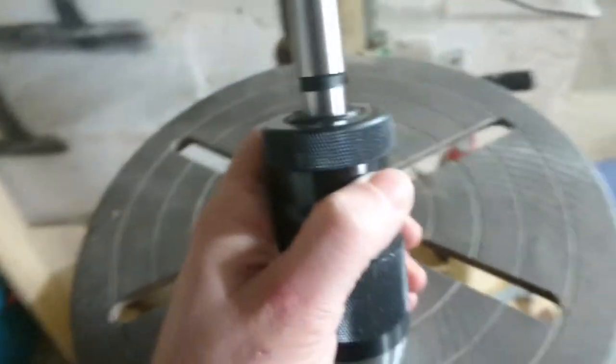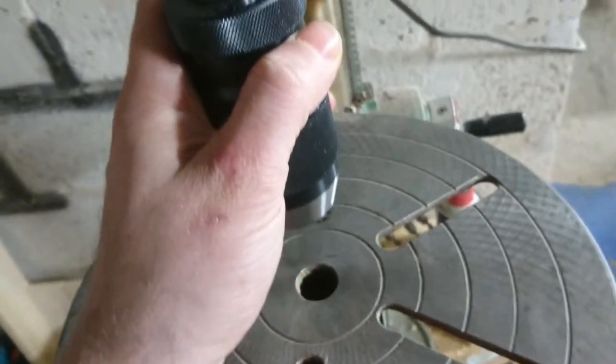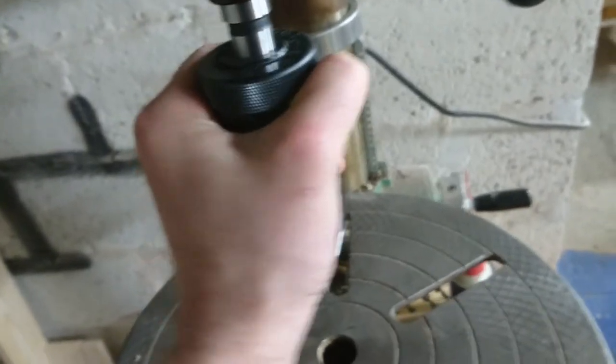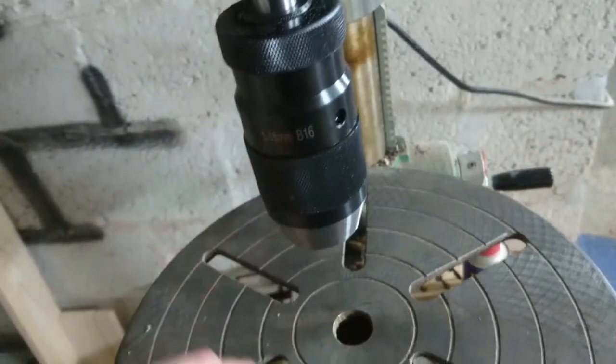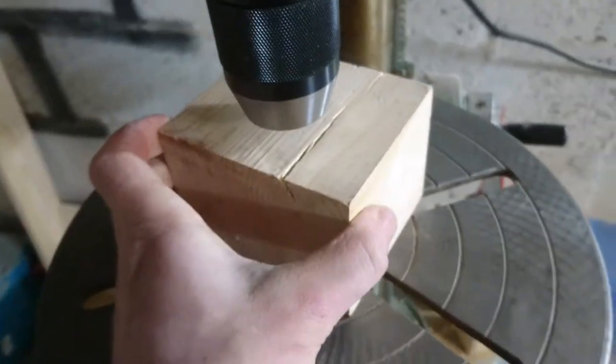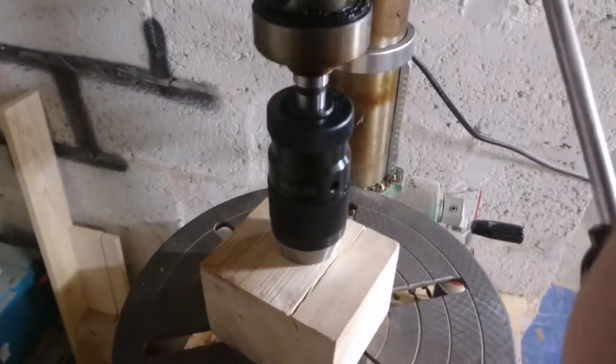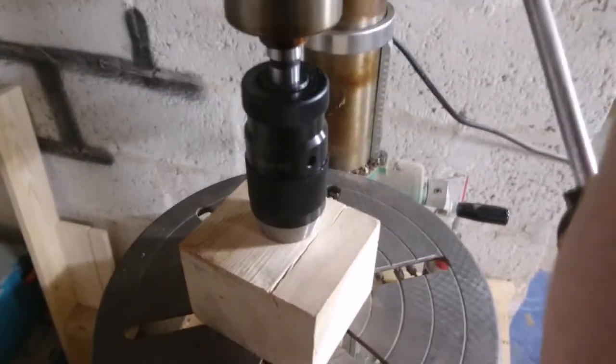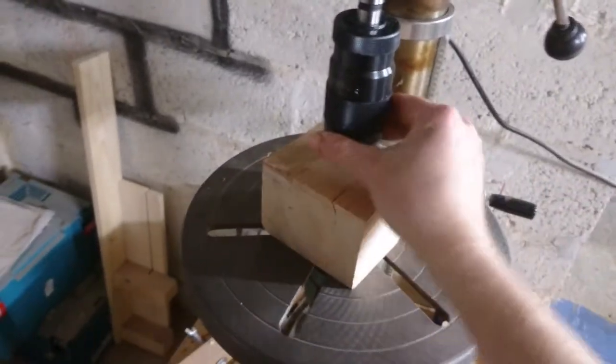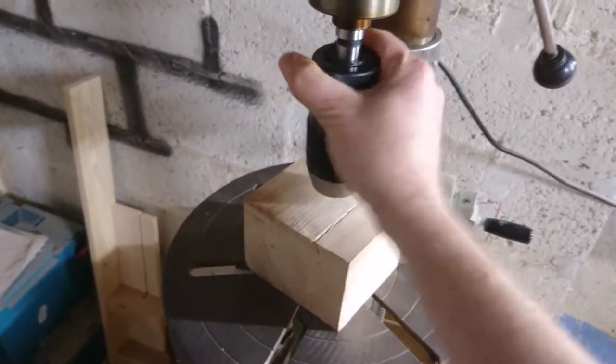And we do that simply by inserting it in here, holding it tight. Now we grab our piece of wood, place it underneath, and we are not going to use too much force. We are just going to push down on it a bit. There we go. And the drill chuck is in.